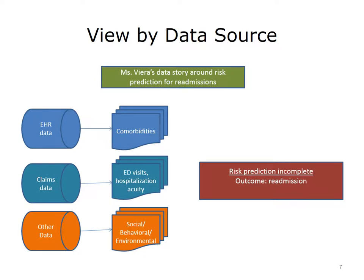The claims data — the set of bills for healthcare — may contain other equally important information. Information about ED visits, the acuity of the hospitalization, and final diagnoses may only be available through these claims, since the hospital may be on a different system. Other data, usually not stored in either the EHR or claims data, may also be helpful, such as social, behavioral, and environmental data — for example, the availability of healthy food in certain urban settings. The lack of integration of this data leads to poor prediction in healthcare settings, and Ms. Vieira may be readmitted because the system did not adapt.